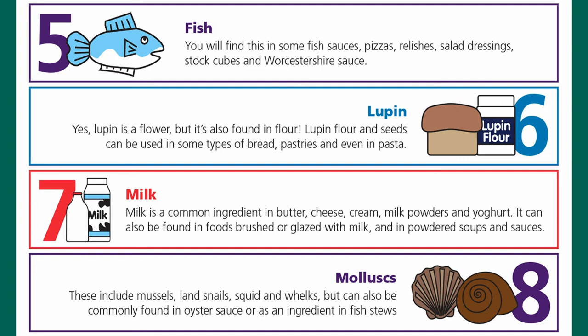Lupin — a flour — can be found in some types of bread, pastries, and even pasta. Number seven is milk, a common ingredient in butter, cheese, cream, milk powders, and yogurt. It can also be found in foods brushed or glazed with milk and in powdered soups and sauces.